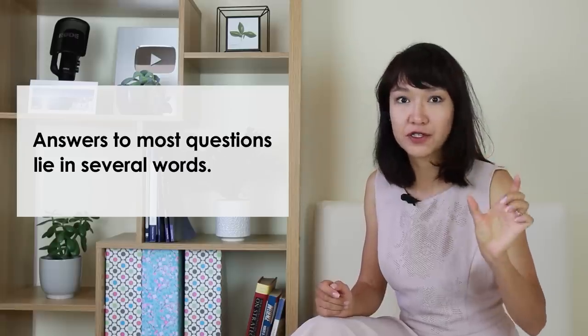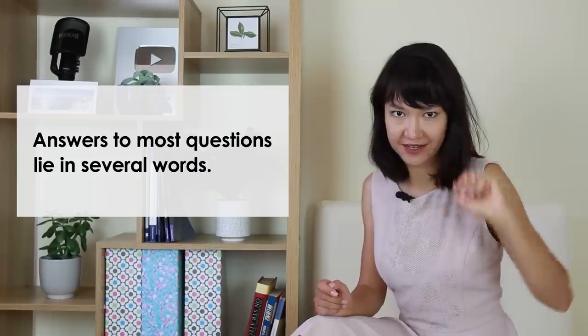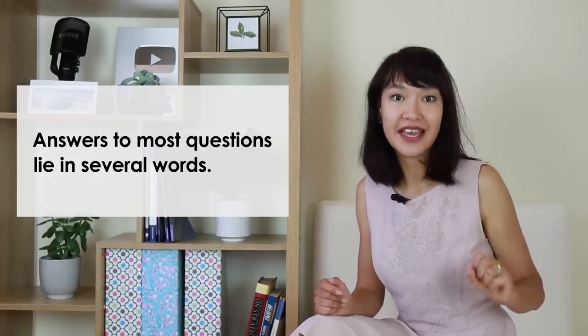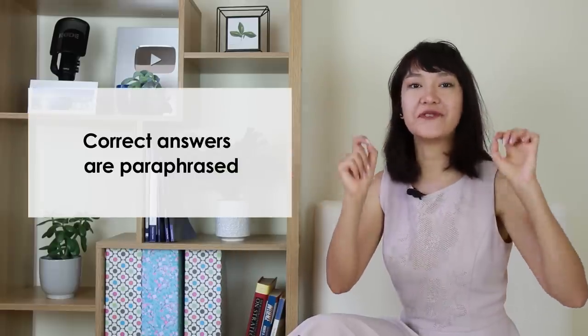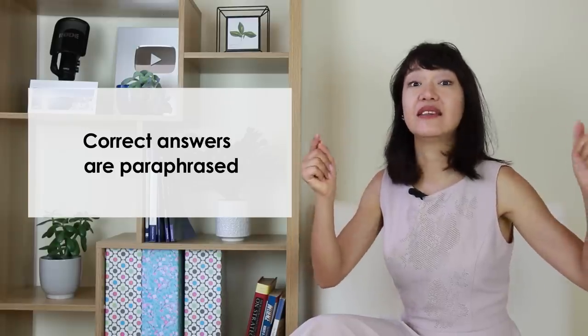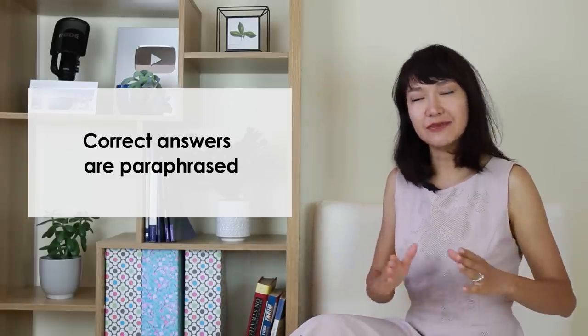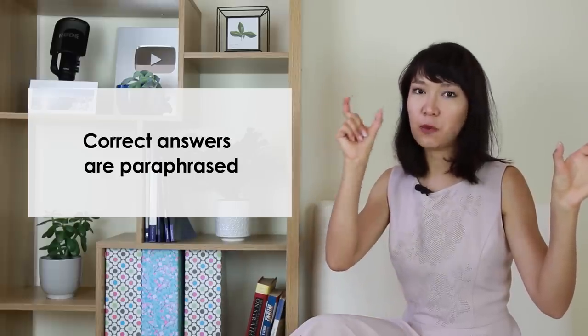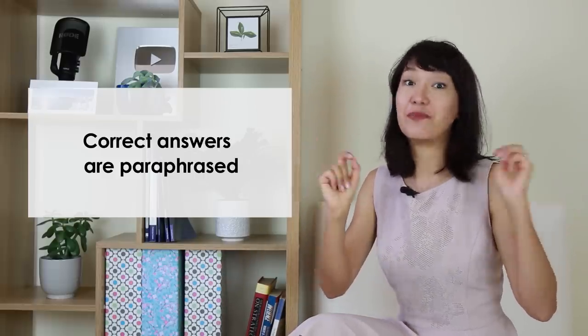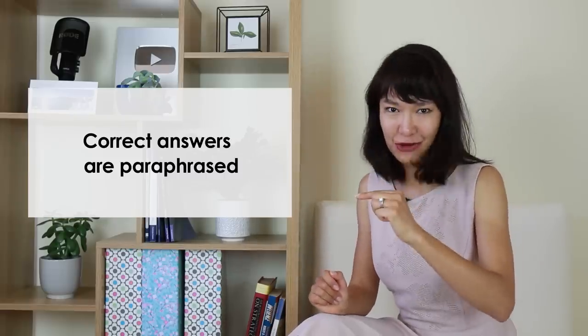You know in IELTS, answers to most questions lie in several words. You don't need to understand everything. You just need to find those words. And that's where keywords help. But also remember that the correct option and the words in the text will be paraphrased. They will not be repeated. But when you look at the meaning, the meaning is the same. But sometimes you may find words in the text and the same words in one of the options. Most likely this is not the correct option. This is a trap. So check the meaning.